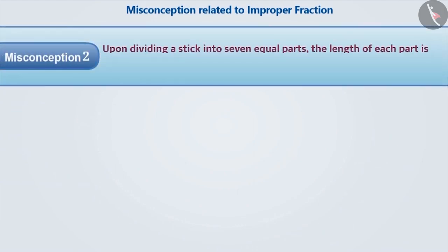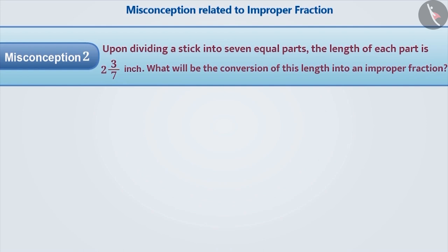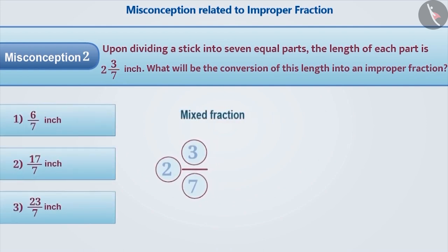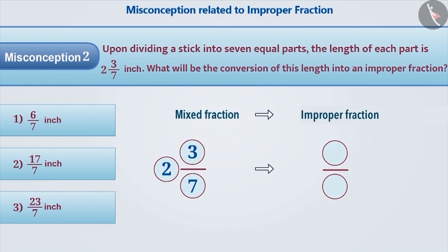Misconception 2. Upon dividing a stick into 7 equal parts, the length of each part is 2 3/7 inch. What will be the conversion of this length into an improper fraction? While converting a mixed fraction into an improper fraction, sometimes the result obtained by multiplying the whole number with the numerator is written in the place of numerator. This gives an incorrect answer of 6/7.